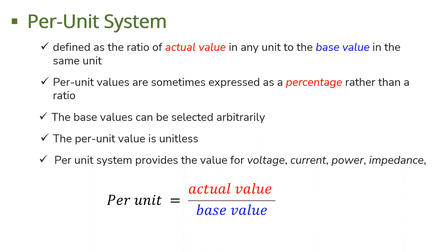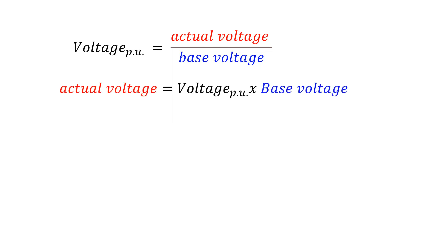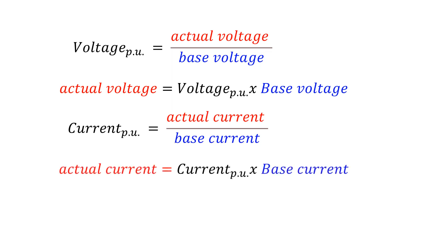The equation used to find the per unit is: actual value divided by the base value. If you're looking for the per unit voltage, the per unit voltage is equal to actual voltage divided by the base voltage. Similarly, the actual voltage equals per unit voltage multiplied by the base voltage. The same applies to per unit current: per unit current equals actual current divided by base current, and actual current equals per unit current multiplied by base current.